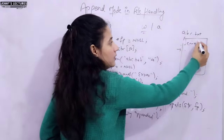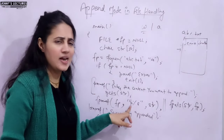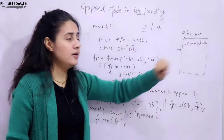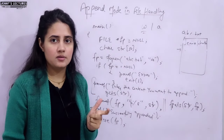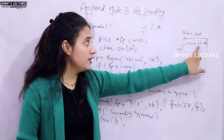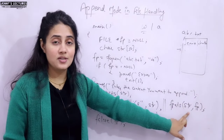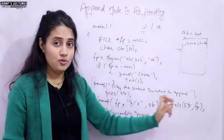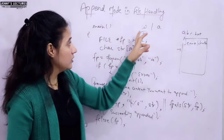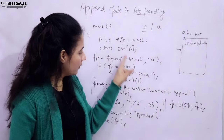In append mode, if 'Jenny' is in the file and you add 'Khatri', Khatri is appended — on the same line if no '\n', or on the next line if '\n' is used. So now you understand the concept of append mode and the difference between write mode and append mode. Let me show you a practical demonstration.